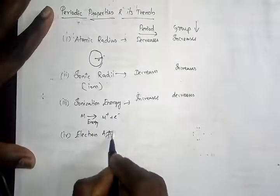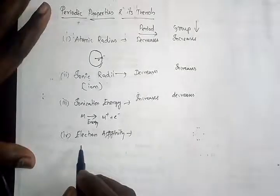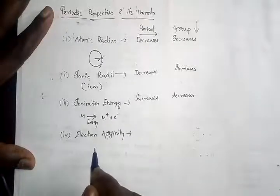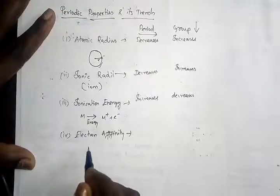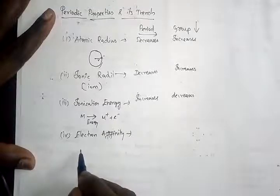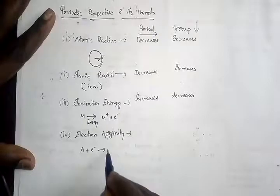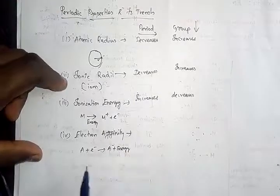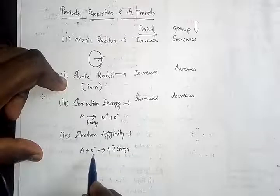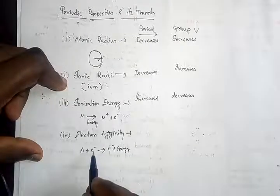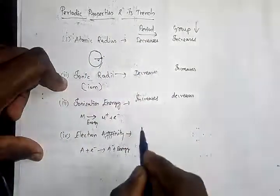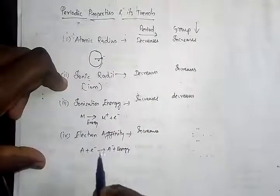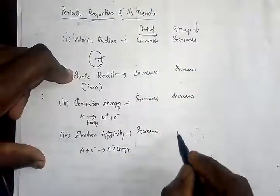The fourth one is electron affinity. When an electron is added to the valence shell of an isolated gaseous atom to form its anion — atom plus electron gives A minus plus energy — energy is released in this process. When the atom has a small size, the nucleus has a strong attraction force on the electron, so the incoming electron is easily attached. When you go along the period, the size reduces, so electron affinity increases. Down the group, atomic size is bigger, so electron affinity decreases.